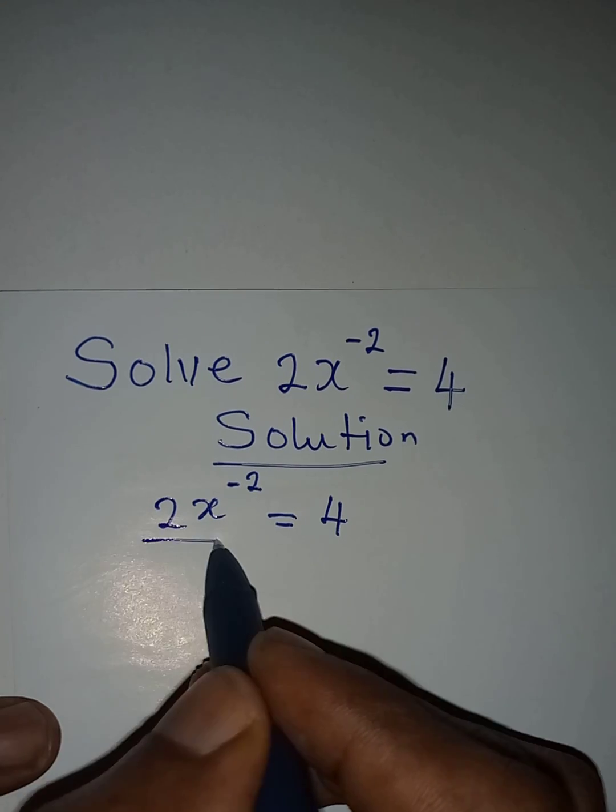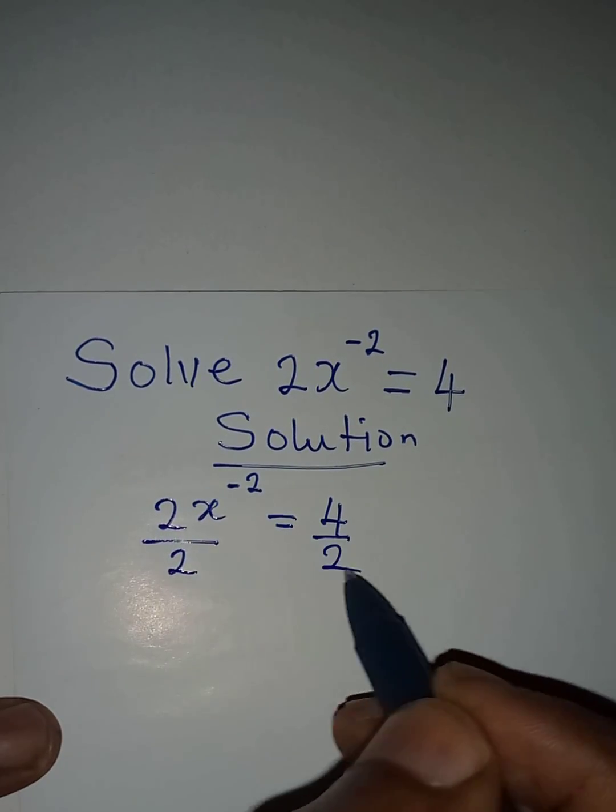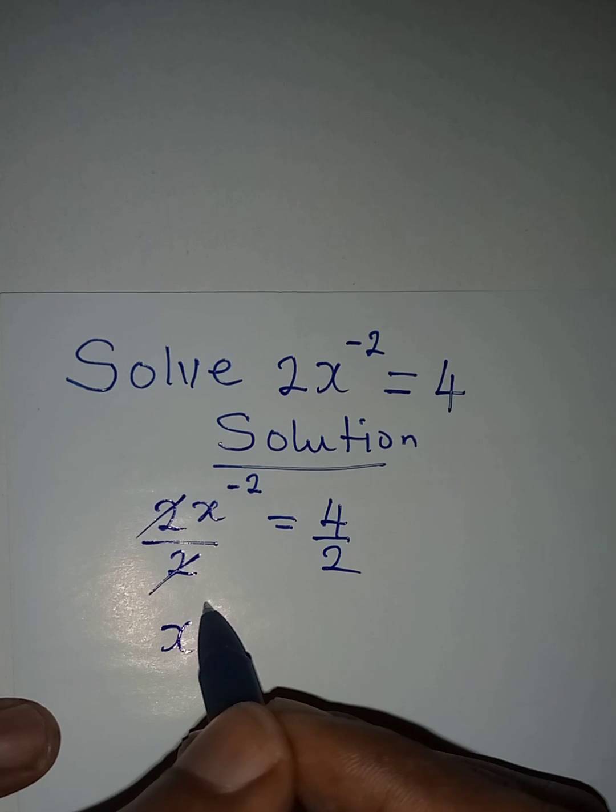So we are free to divide both sides by 2. Two can cancel two, and then x to the power of negative 2 will be equal to 2.